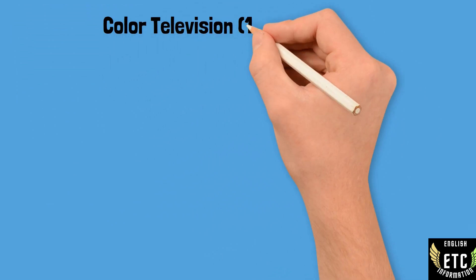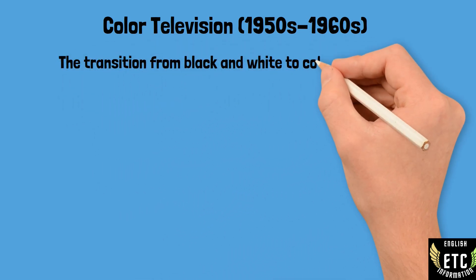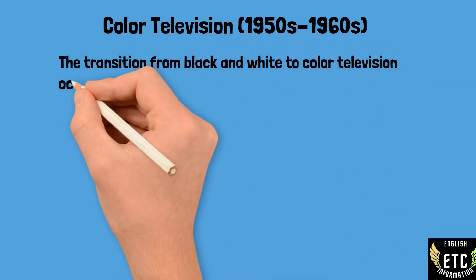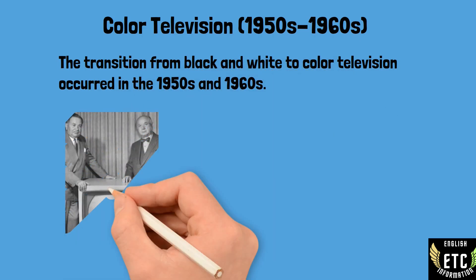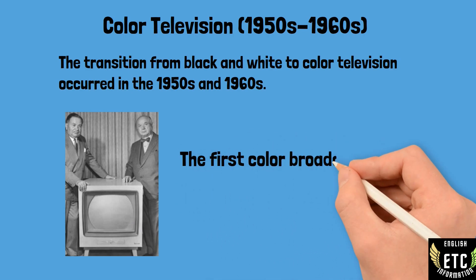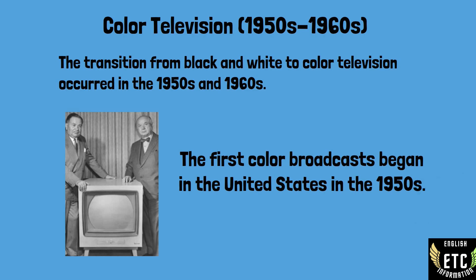The transition from black and white to color television occurred in the 1950s and 1960s. The first color broadcasts began in the United States in the 1950s. The adoption of compatible color television standards such as NTSC facilitated the widespread use of color television.